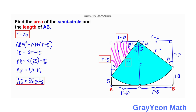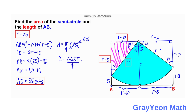Next we find the area of the quarter circle. The area of a quarter circle equals πR² divided by 4. With R = 25, R² = 625, so the area is 625π/4 square units. This is our answer for the area.